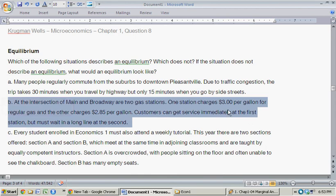Moving on to B. At the intersection of Main and Broadway, there are two gas stations. One charges $3 per gallon for regular gas and the other charges $2.85 per gallon. Customers can get service immediately at the first but must wait a long line for the second.